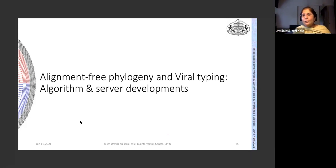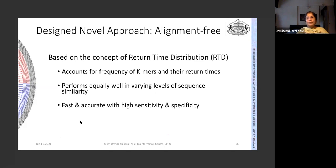A key bottleneck of alignment-based methods is scalability: if you want to type one additional isolate, you have to redo the multiple sequence alignment, rebuild the phylogenetic model, and re-interpret the tree. That drove the development of alignment-free methods, especially needed for microbial and viral typing. In our lab, we designed a novel alignment-free approach for typing and phylogeny of viruses based on the concept of return time distribution. These methods work with the frequency of k-mers and their return times to generate clustering patterns. They work equally well at varying levels of sequence similarity from about 30% to 99% and are fast, accurate, and highly sensitive.